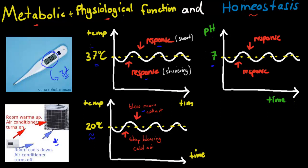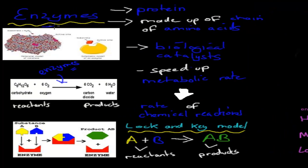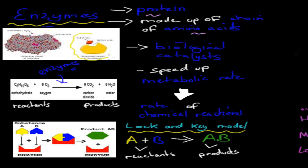But why does our body actually want to keep 37 degrees Celsius? Why does it want to keep a pH of 7? That's connected to something called enzymes. Enzymes are made up of protein — basically a chain of amino acids. You can see here an example of an enzyme; those little balls are amino acids. Enzymes work as biological catalysts, meaning they speed up the metabolic rate — the rate of chemical reactions.